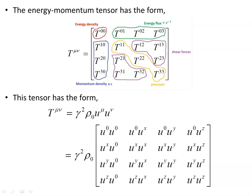From the last video, we found the energy-momentum tensor has the form described here — momentum density, energy flux, pressure, shear, and energy density for this single time component. This tensor was found to have this form in some Lorentz frame. In a frame at rest with respect to the matter, which was a stream of non-interacting particles, gamma would be 1 and we'd just have rho_0 u^mu u^nu. In some other frame moving with respect to the rest frame of the particles, we'd have the gamma squared term. So the energy-momentum tensor took this form.